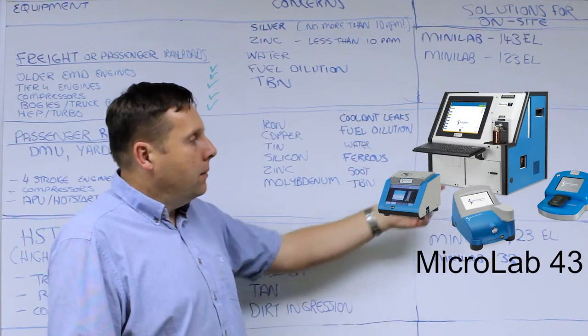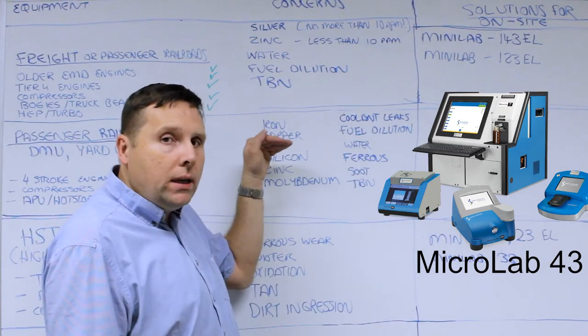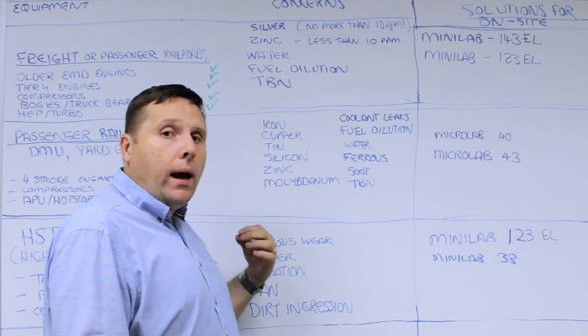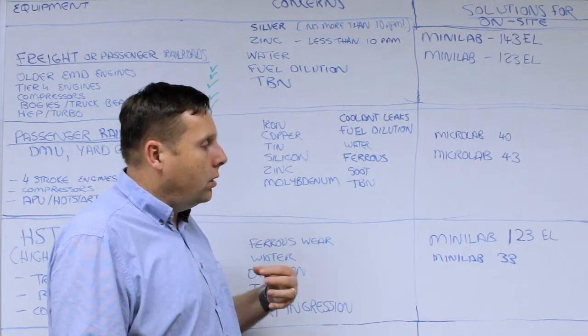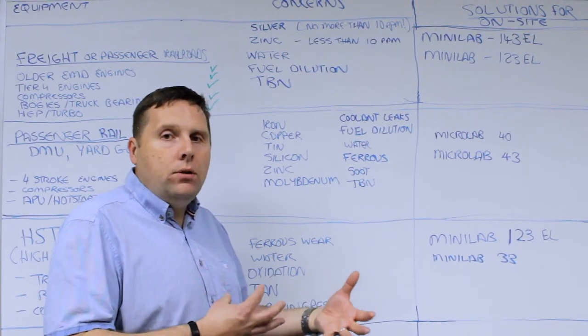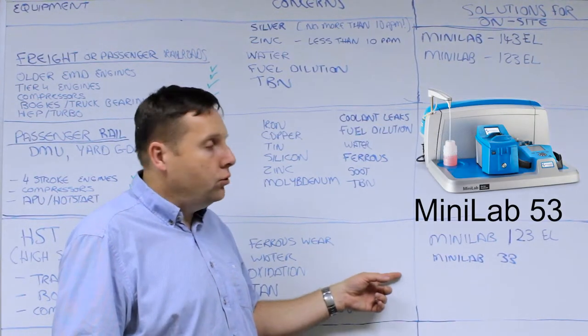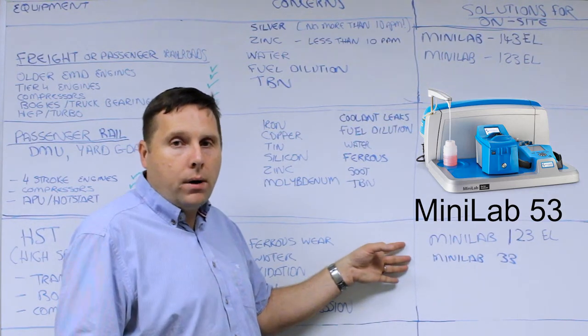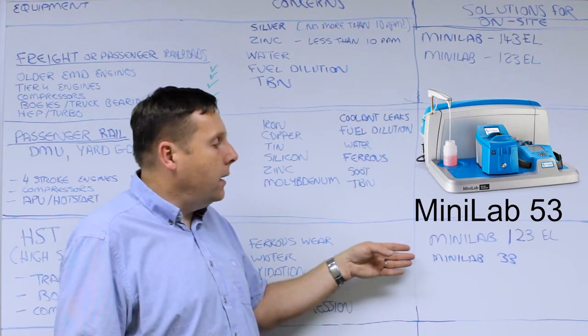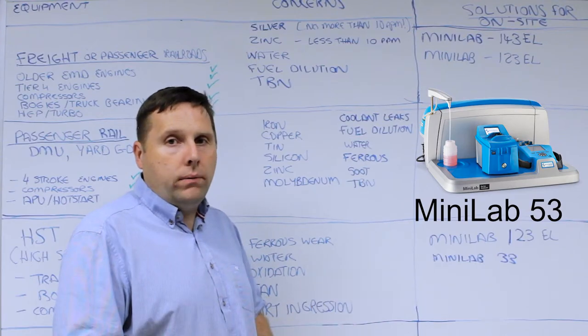For traditional passenger rail with DMUs or hybrid versions dealing with four-stroke engines, the MicroLab 40 or MicroLab 43 options are ideal. The MicroLab 43 solution gives you extra ferrous density which you can add to existing wear elements for a complete solution. For high-speed rail applications with electric train systems, think of it almost like high-speed industrial manufacturing on wheels—MiniLab is the best solution with particular focus on particle count, ferrous wear analysis, and the ability to measure grease from the bogeys.